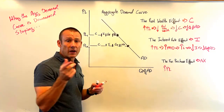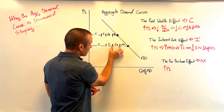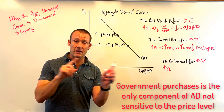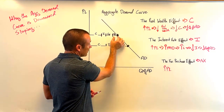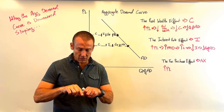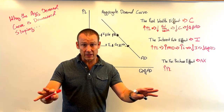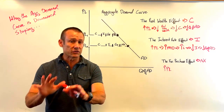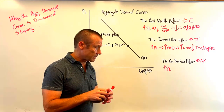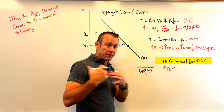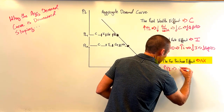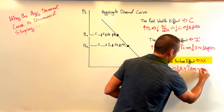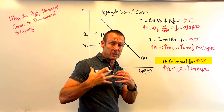When the price level goes up, government purchases don't change — they're determined by legislation and are not sensitive to the price level. Net exports, however, will decrease. With the domestic price level going up, ceteris paribus — exchange rates held constant and other countries' price levels held constant — our prices are rising while theirs aren't. People will buy less of our stuff, so exports go down, and we'll buy more of other countries' stuff, so imports go up. Net exports (XN or NX) decrease, giving us another decrease in the quantity of AD.